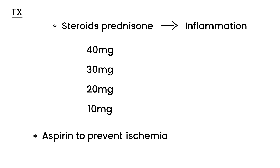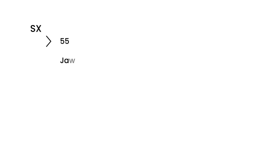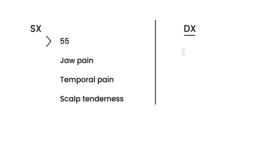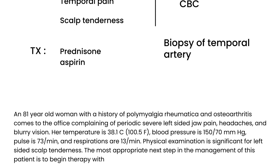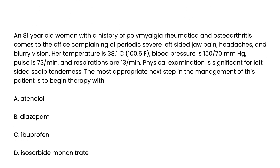Key points: someone greater than 55 with jaw pain, temporal pain, and scalp tenderness. You do some tests — ESR, C-reactive protein, CBC — and it all points to temporal arteritis. You order a biopsy of the temporal artery, but since it won't be done for two days, you immediately initiate treatment with prednisone and also give the patient aspirin. Not the easiest diagnosis but a rather interesting one. Let's look at some clinical vignettes.